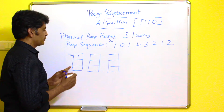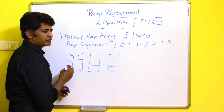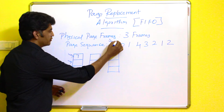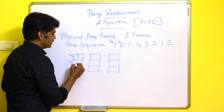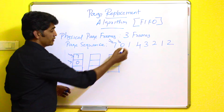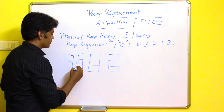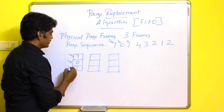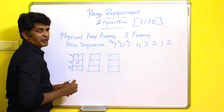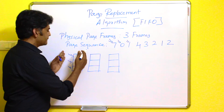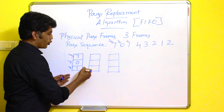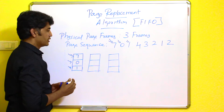After that, the second page comes in — again a page fault will occur, and the newer page will be transferred to the physical frame. After that, here again a newer page starts with a page fault, then that newer page will be entered. Now all the frames are filled with the required pages.